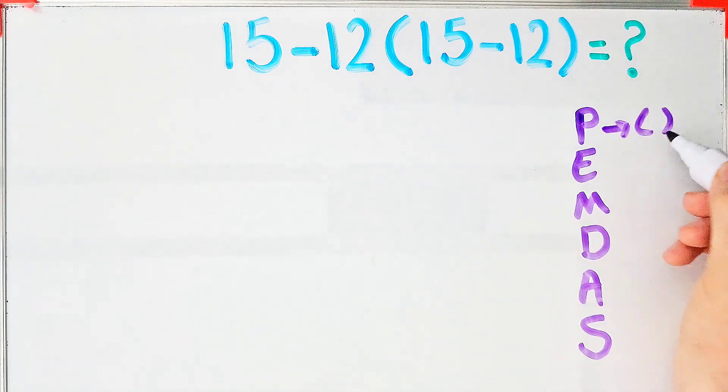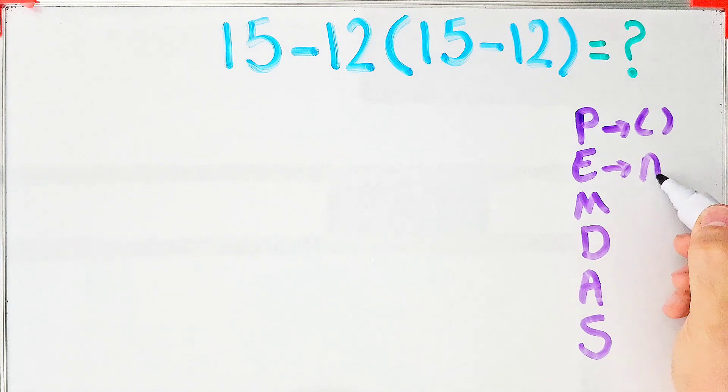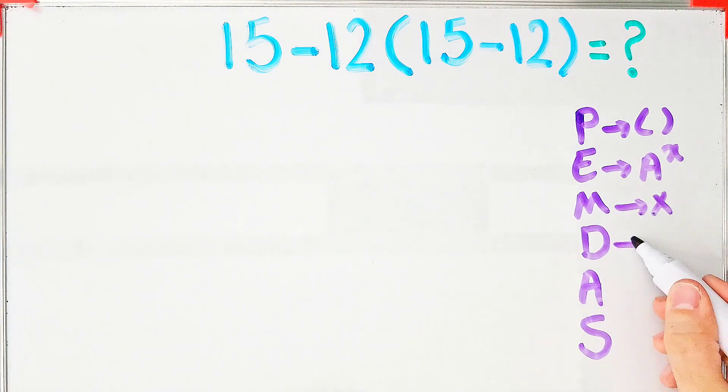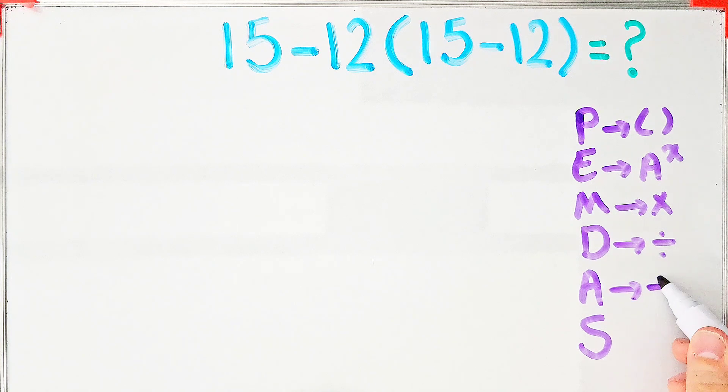In this rule, P stands for parentheses, E stands for exponent, M stands for multiplication, D stands for division, A stands for addition, and S stands for subtraction.